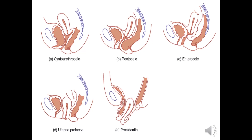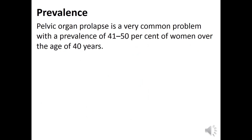Types include urethrocele, rectocele, enterocele, uterine prolapse, and procedentia. Pelvic organ prolapse is a very common problem with a prevalence of 41 to 50% of women over the age of 40 years.